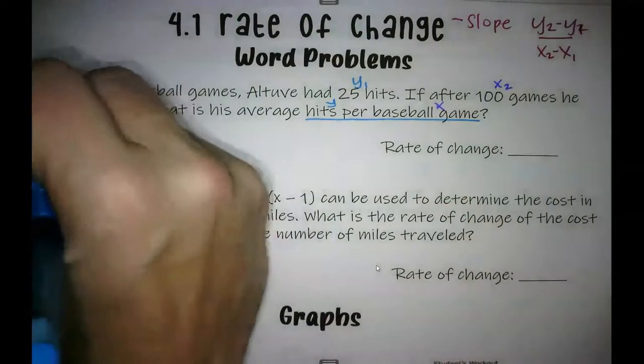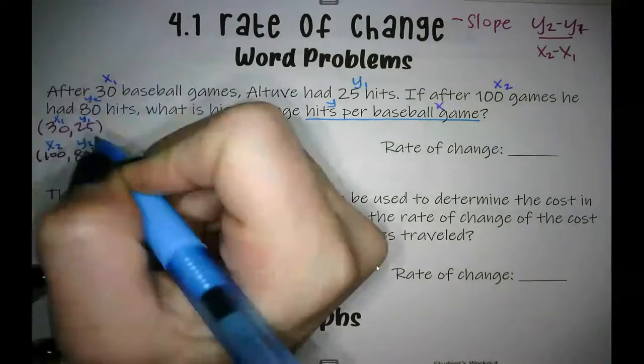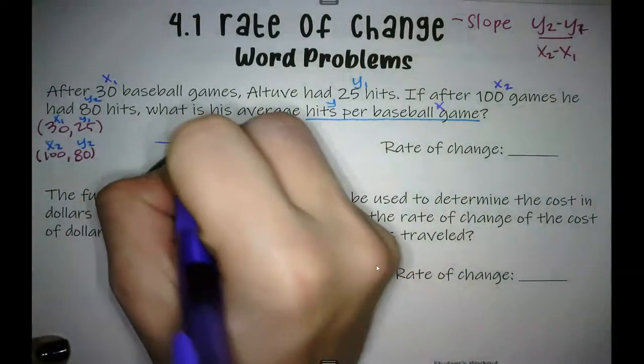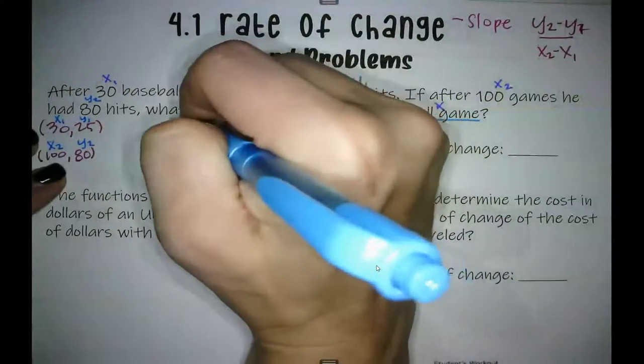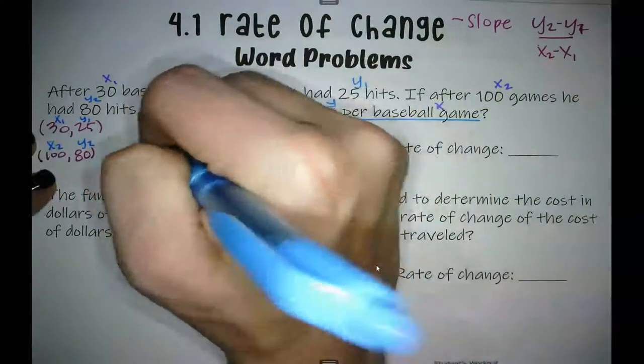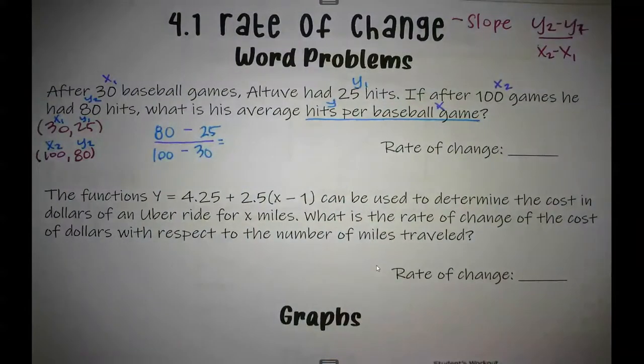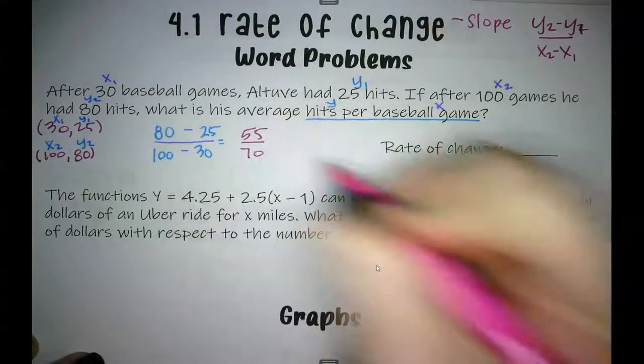So this is X1, Y1, X2, Y2, and I'm plugging it into my formula. We've got 80 minus 25 over 100 minus 30. And what I get here is 55 over 70.